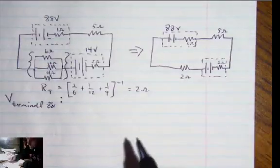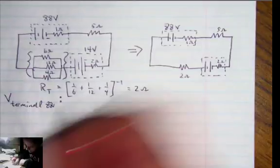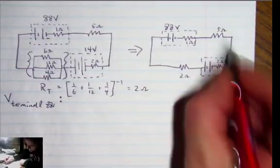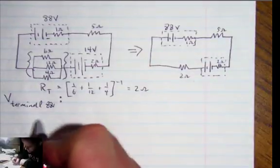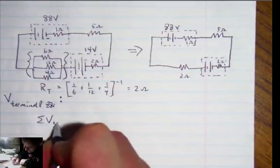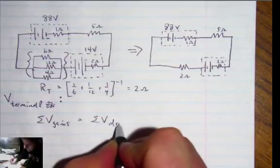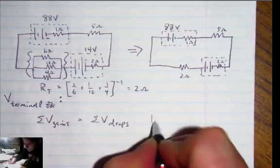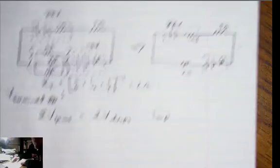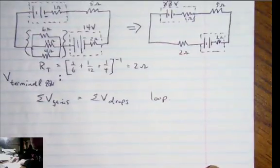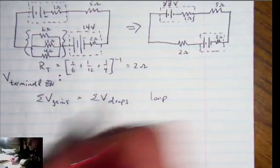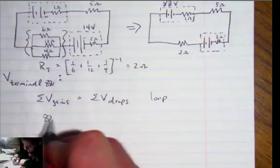Now a loop rule. A loop rule here, we have one single loop and this is what it looks like. We have the sum of the V gains equals the sum of the V drops on any loop. The loop that we're examining is this loop right here.